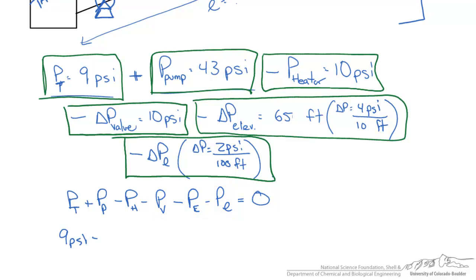So we have 9 psi plus 43 psi minus 10 minus 10 minus 26, and then minus our variable of interest, which is going to be our L times 2 over 100. This equals zero.